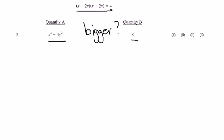Quantity in column A is bigger, quantity in column B is bigger, they're the same, or we can't tell. Those are the answer choices A, B, C, and D respectively.